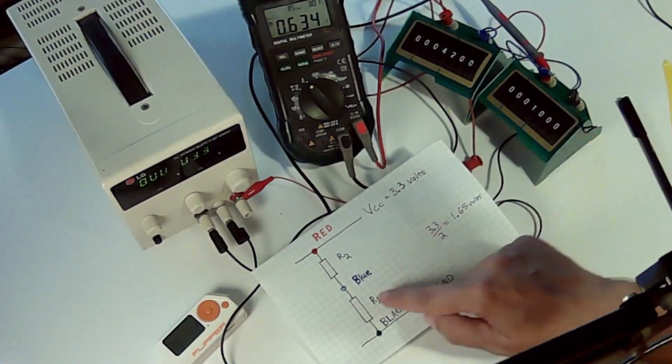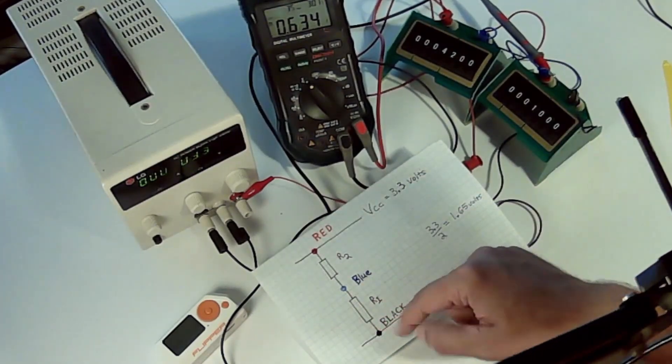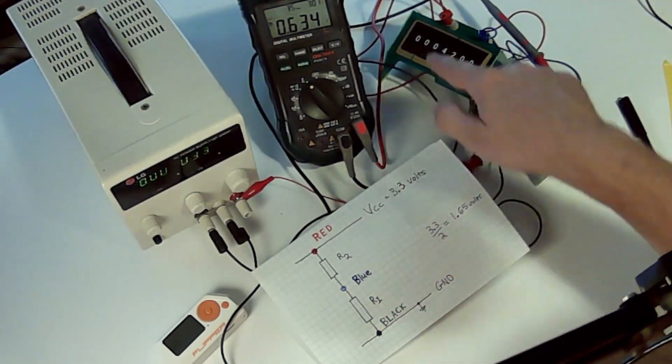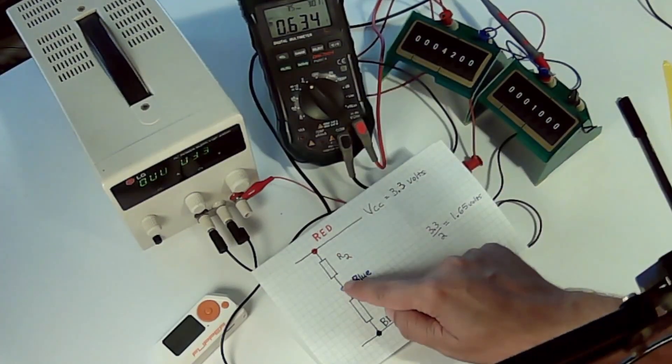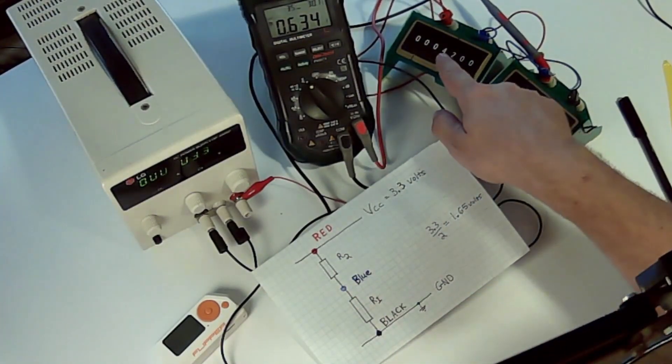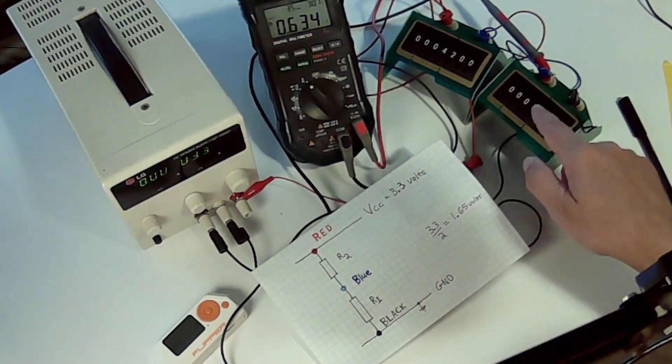Let's get started. So I've hooked up R1 here and I've hooked up R2 here. They're in series and there's 3.3 volts coming in, and our meter is showing us at the blue connection. Right now R2 is 4.2k and R1 is 1k.